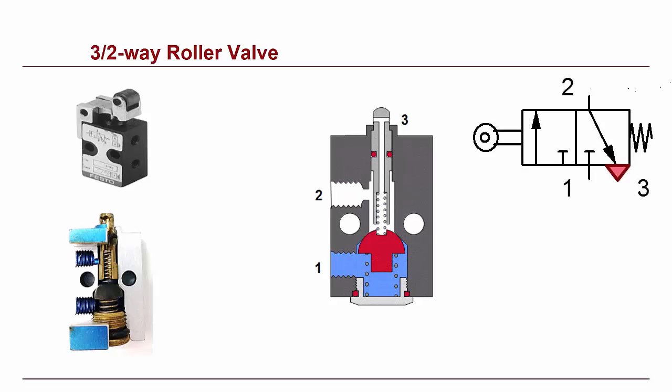When the roller valve is not activated, compressed air supply to port 1 is blocked, but port 2 and 3 are connected. That is, air can travel freely between the two ports. Note that port 3 is normally an exhaust port, air escaped to atmosphere through this port.